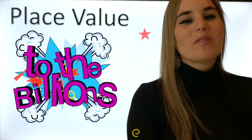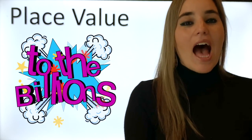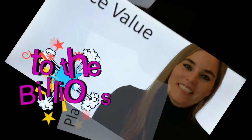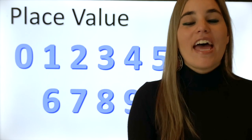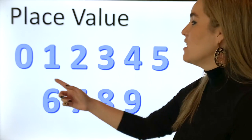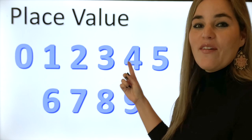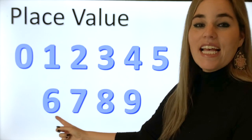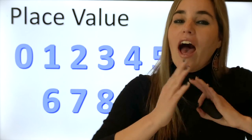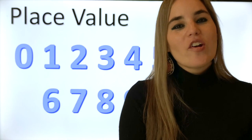Hello math experts, welcome to Learning with Me. I'm Sam and I'm gonna teach you a very important lesson about place value to the billions. Why do we need to know this? Every single number in the universe is made out of digits, and the digits are 0, 1, 2, 3, 4, 5, 6, 7, 8, and 9. If you arrange these digits in different order, you can make a little, medium, or humongous number.